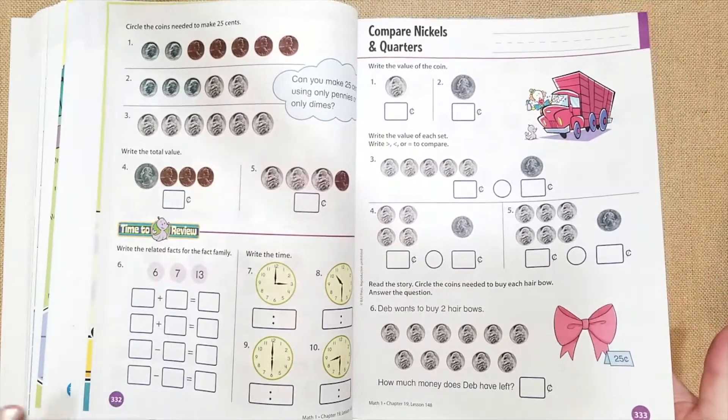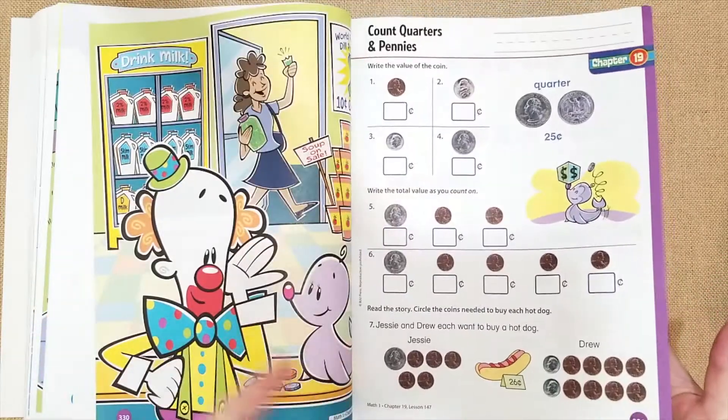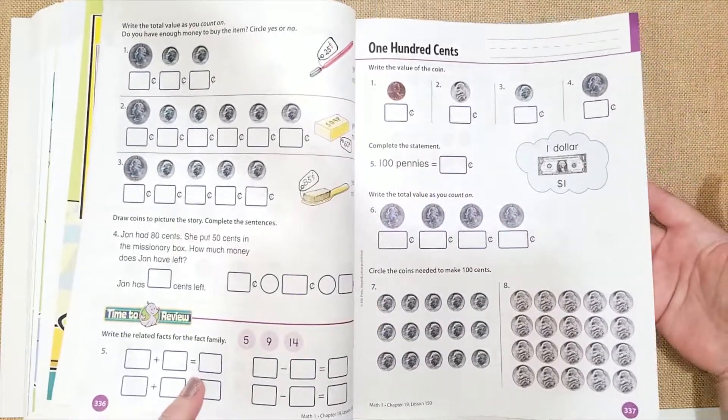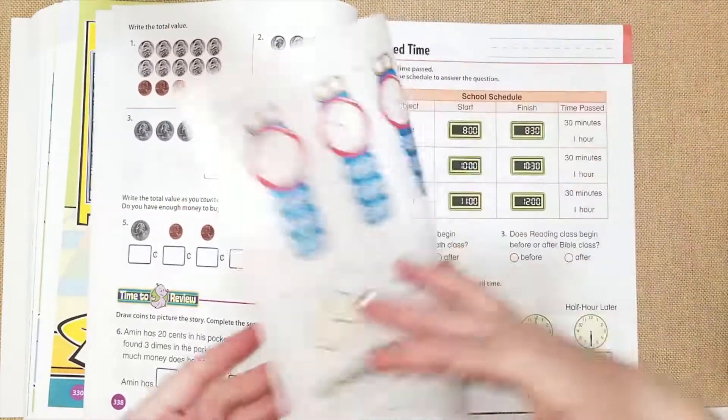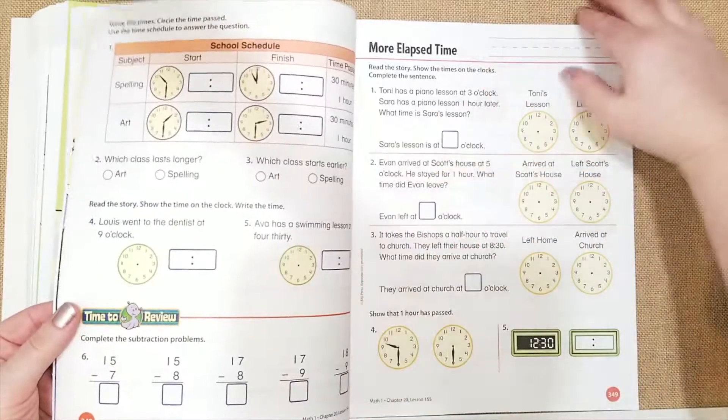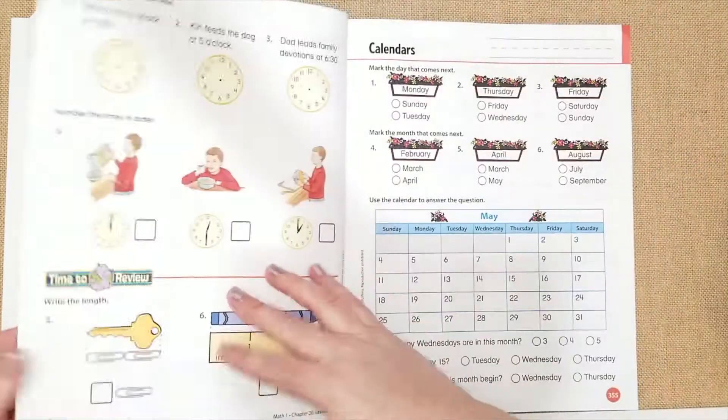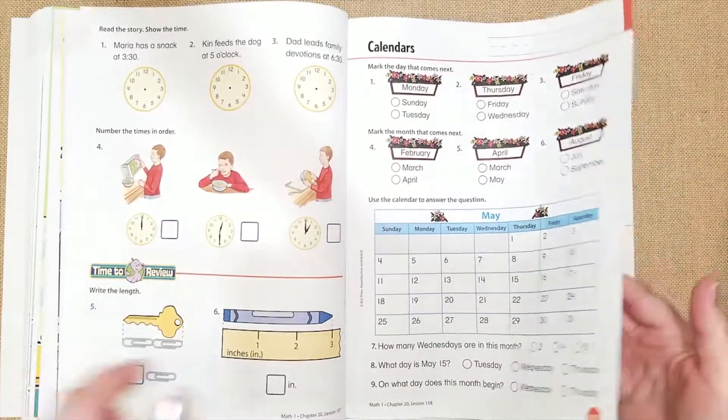They're talking about nickels and quarters, dollars, and they're talking about pennies for chapter 19, and dollar bills right here. They're just going to go over the time again, and probably they're doing estimation on time, so it gets a little harder, and then they're going to do calendar.